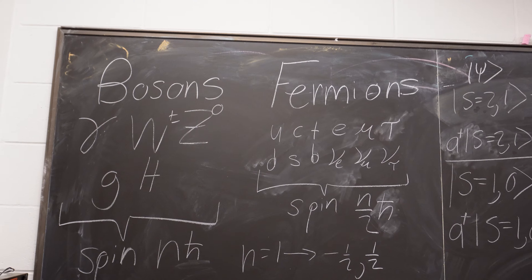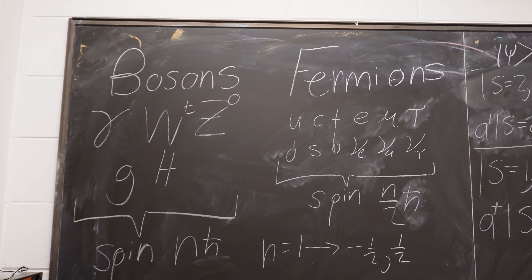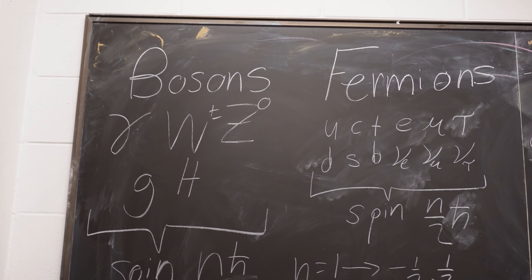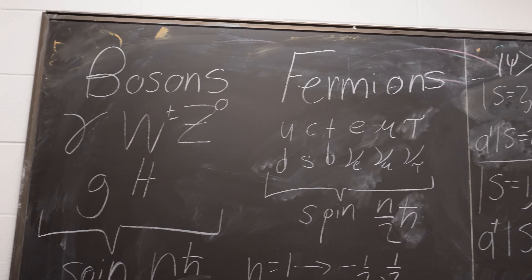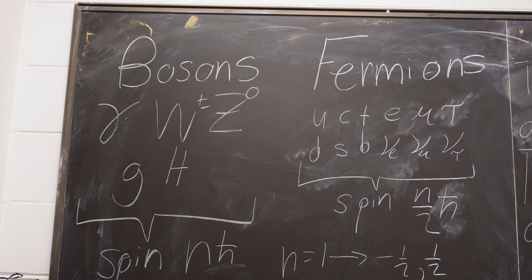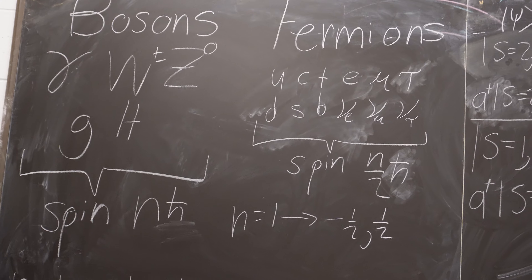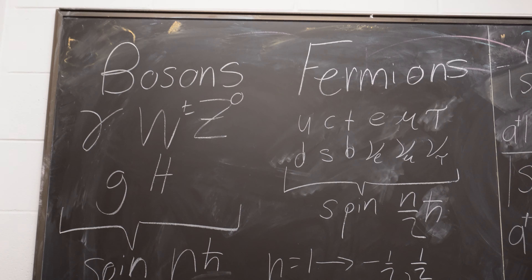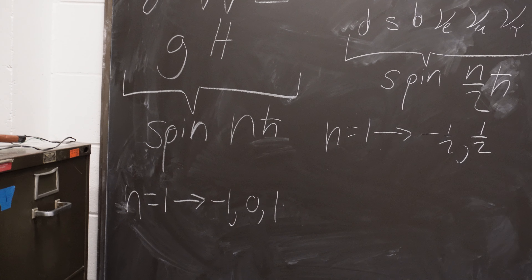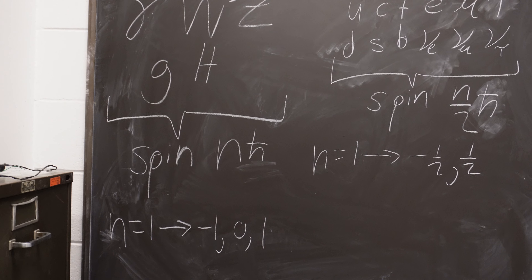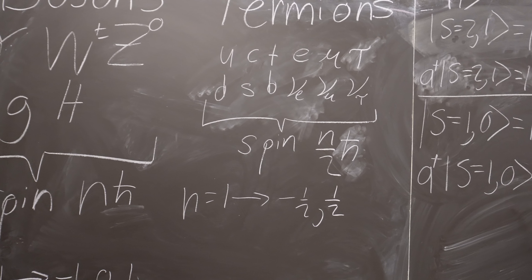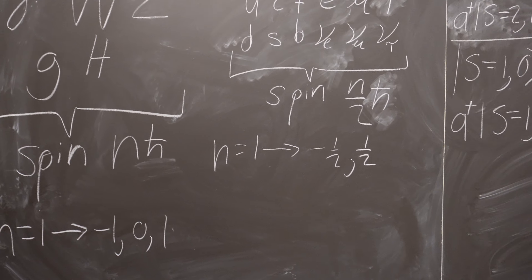Basically, pretty much everything in nature can be classified into two groups: bosons and fermions, and they have these names because of Satyendra Bose and Enrico Fermi. They didn't discover these particles but they discovered that they could be classified in these ways, and what makes them different is the spins they can have. Bosons have a spin equal to an integer number times Planck's constant, and fermions have a spin equal to an integer over two times Planck's constant.